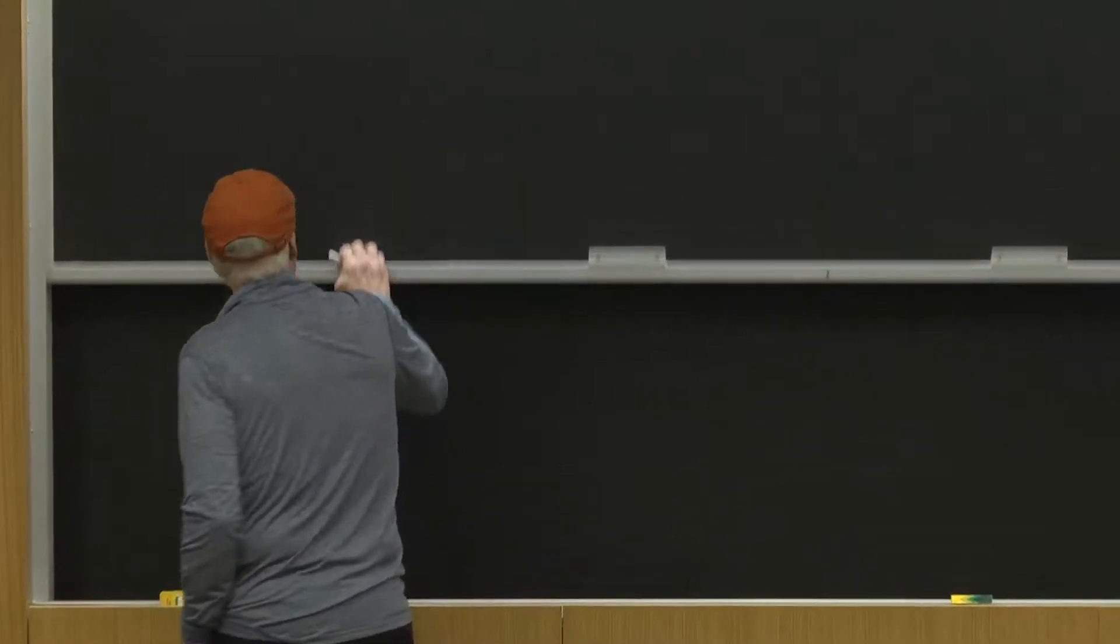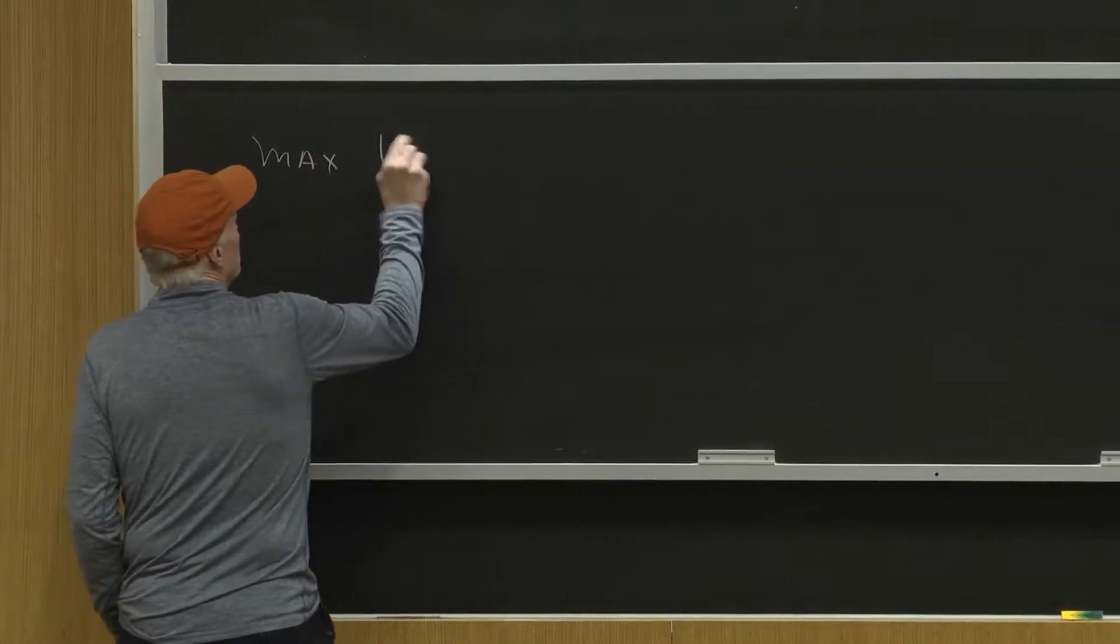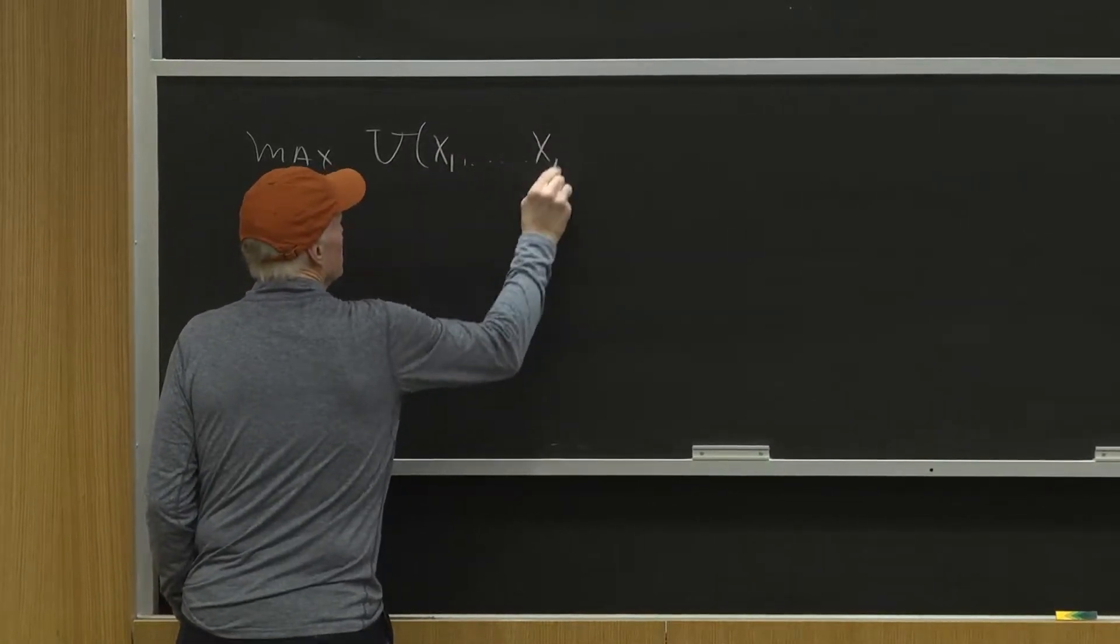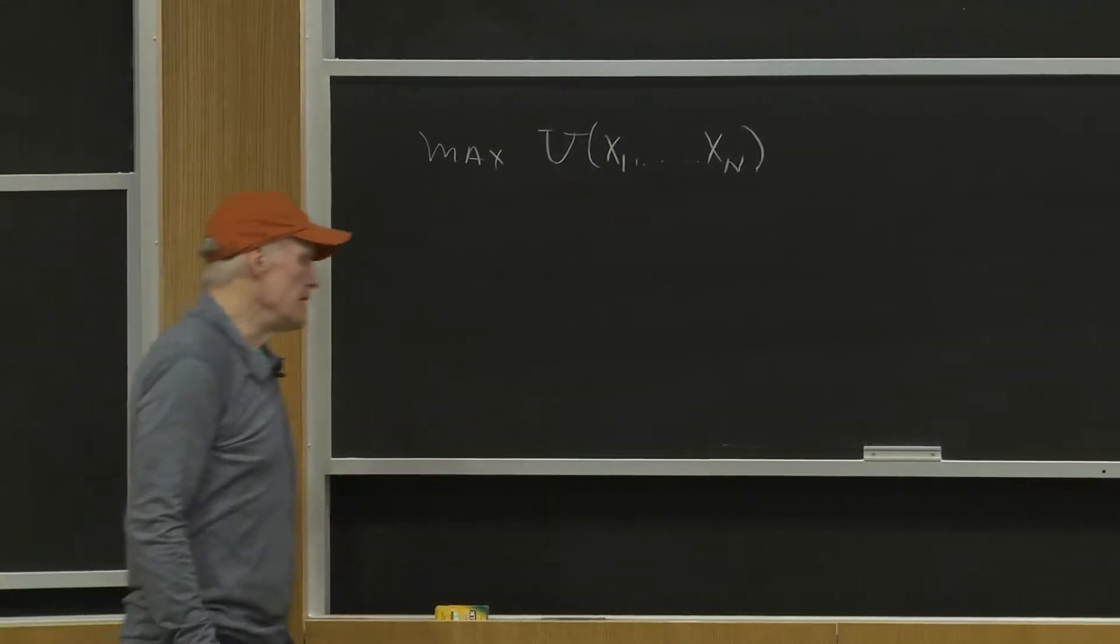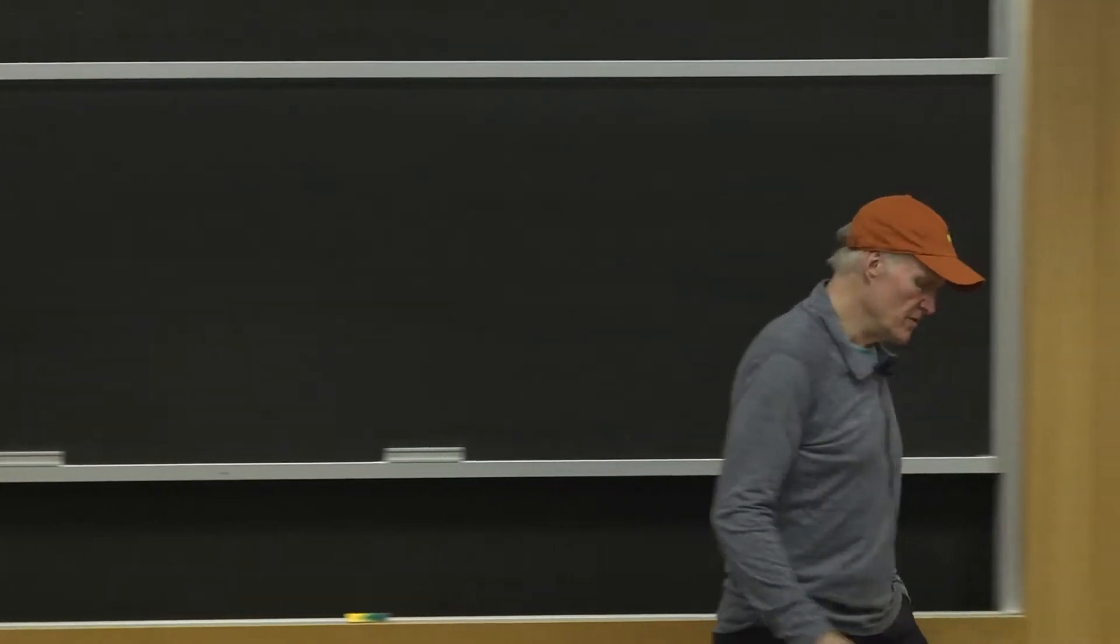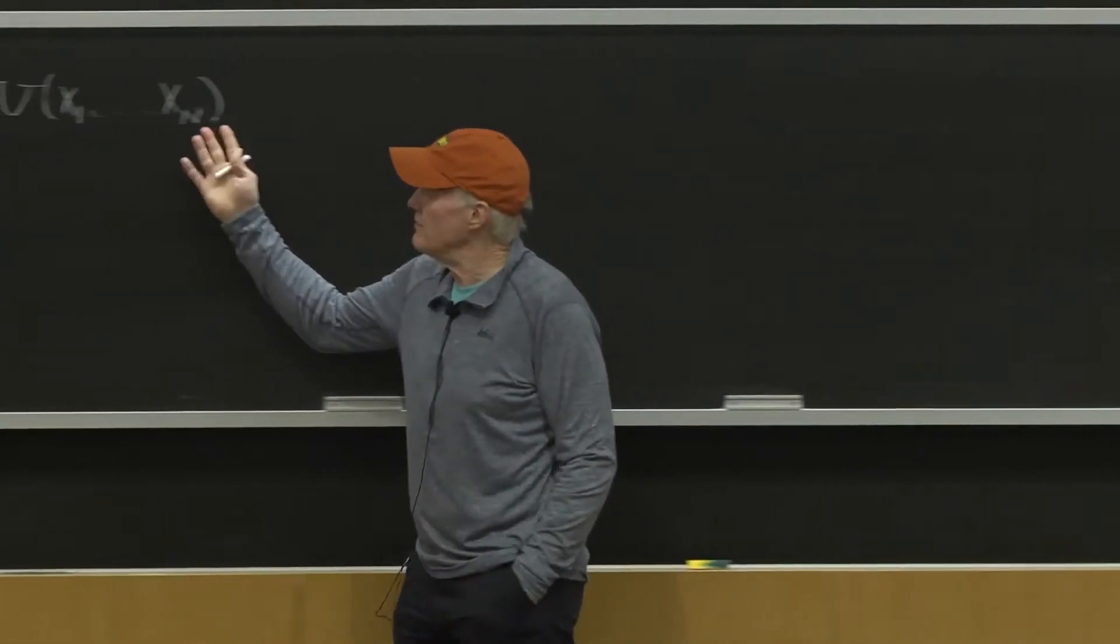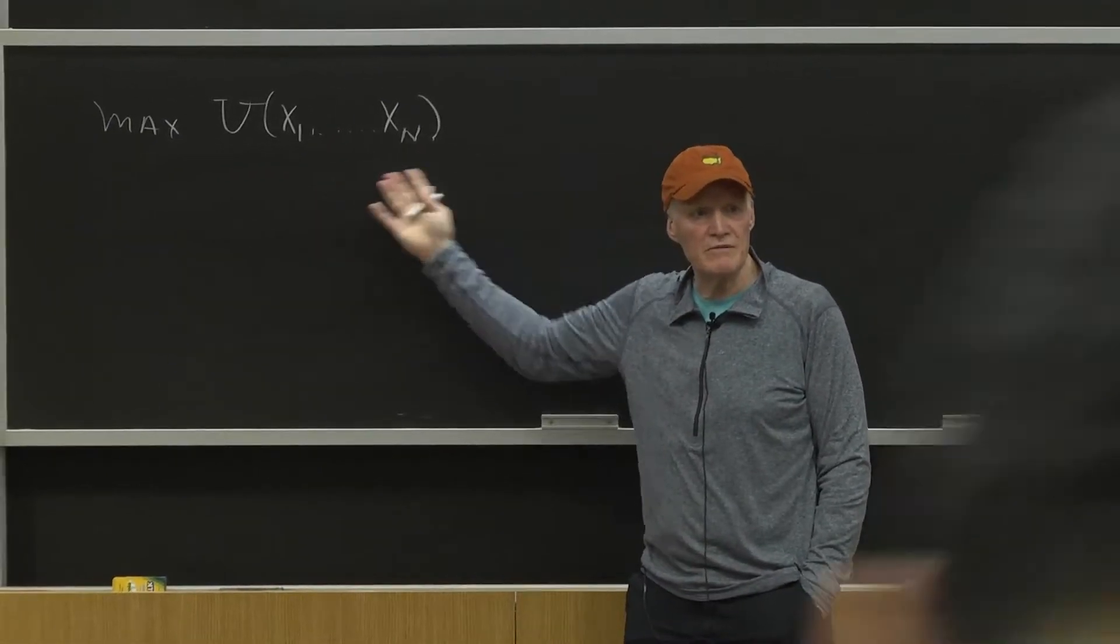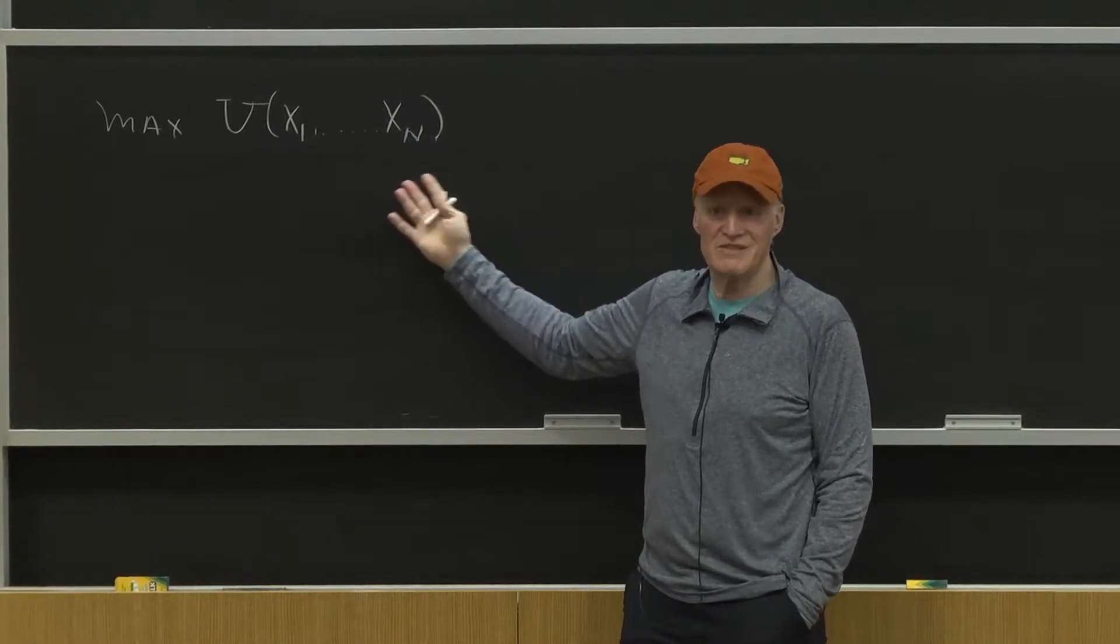The problem we started with was maximize utility, which depends on many goods x1 up to xn. One of the toughest parts of this theory is that we don't have ex-ante information about what this utility function looks like, nor do we actually get to see it.